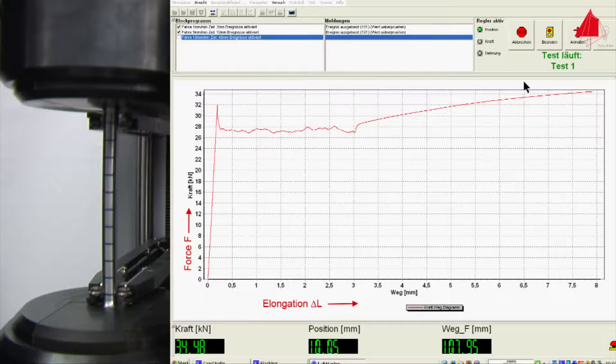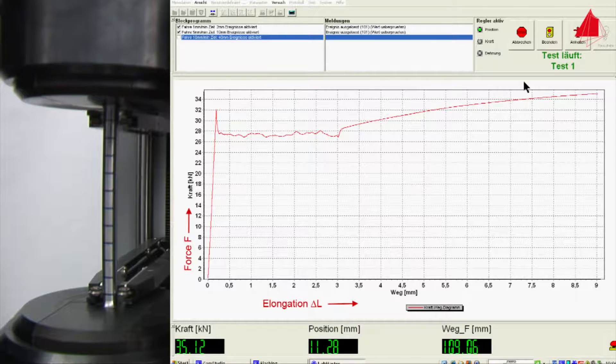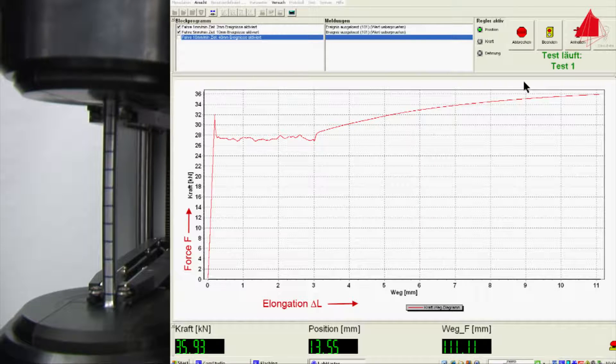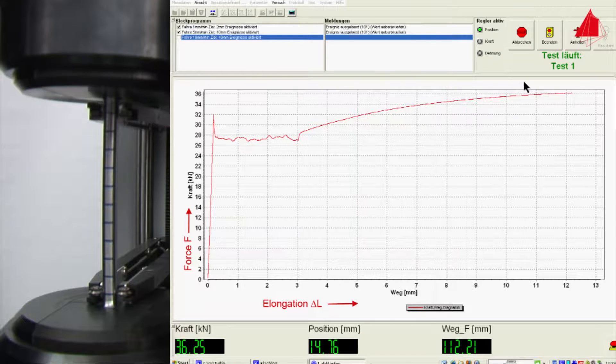Up to the point of maximum force, the test piece is strained uniformly along its length. This means that the test piece gets longer and thinner but keeps a cylindrical shape.